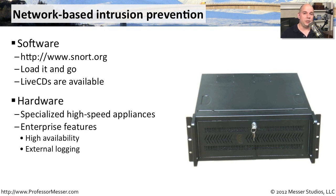In an enterprise, you have very high speed networks — 1 gigabit per second, 10 gigabits per second, multiple 10-gig links going through the core of a network. In those scenarios, you need something really designed for speed. So in an enterprise, you often see the intrusion prevention system integrated into a piece of hardware, so you can still watch traffic and stop the bad guys at a very high rate of speed.